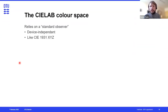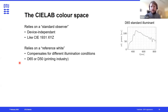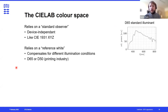So what is the CIE LAB color space? It relies on a so-called standard observer, like the CIE XYZ color space, which makes it device independent — whether you describe a color on paper, on a different material, or on a digital display, the color will always be the same. It also uses a reference white, which means it compensates partially for different illumination conditions. In our case, that will be the D65 standard illuminant, which basically means daylight conditions.